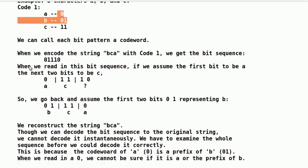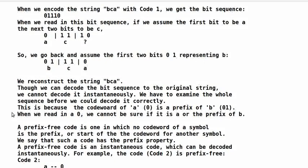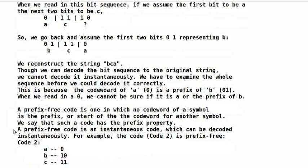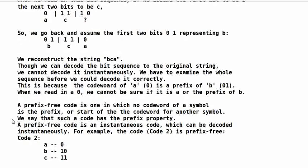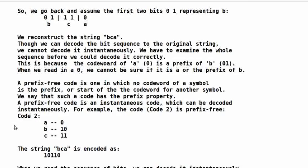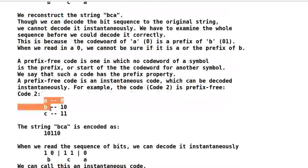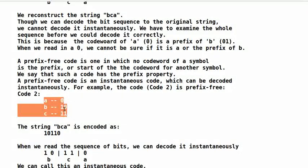A prefix-free code is one in which no codeword of a symbol is the prefix or start of the codeword for another symbol. We say that such a code has the prefix property. A prefix-free code is an instantaneous code, which can be decoded instantaneously. For example, the code, code 2, is prefix-free. In code 2, A is represented by 0, B by 10, C by 11.